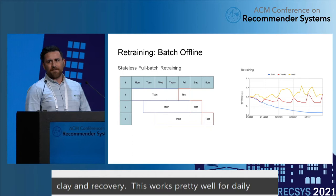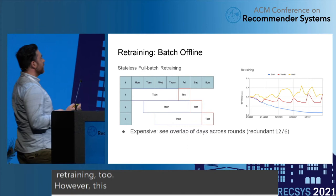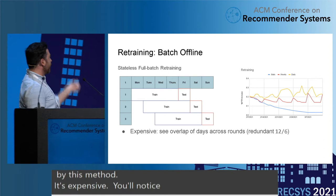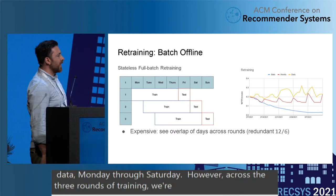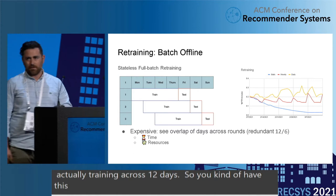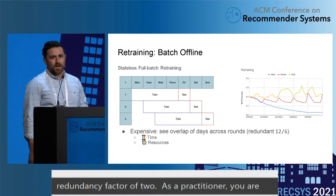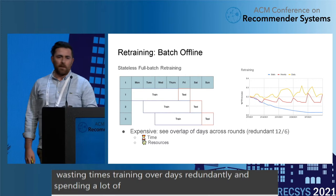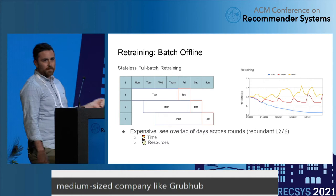However, this doesn't come free — there are costs incurred by this method. We have six unique days of data, Monday through Saturday, but across three rounds of training we're actually training across 12 days, giving a redundancy factor of two. In practice this is expensive in time — you're training over days redundantly and spending a lot of money. If you're a medium-sized company like Grubhub on the public cloud, you're going to be burning a lot of GPU hours.